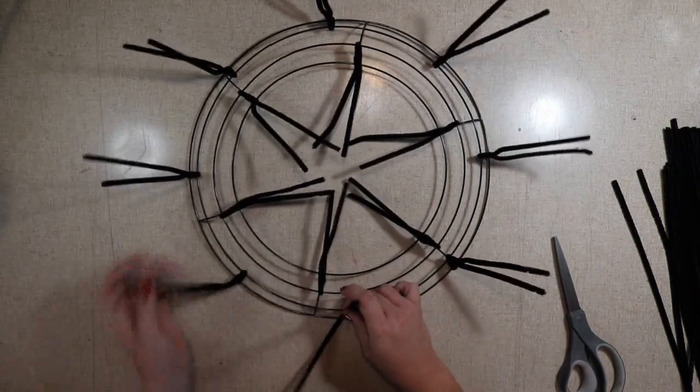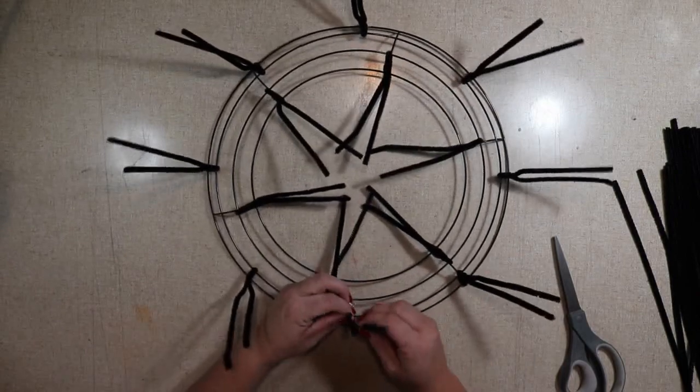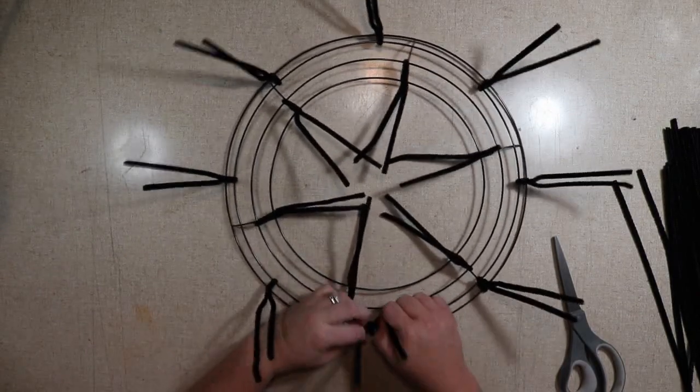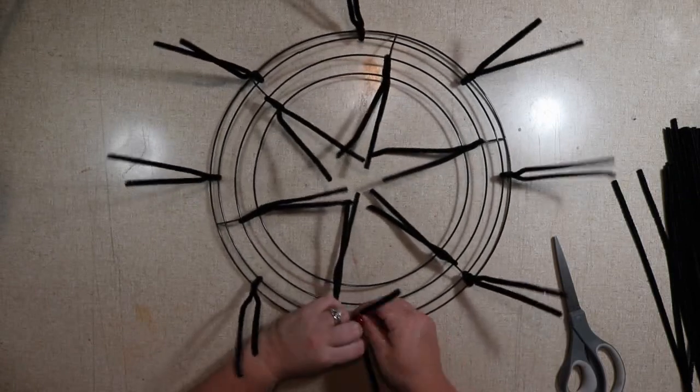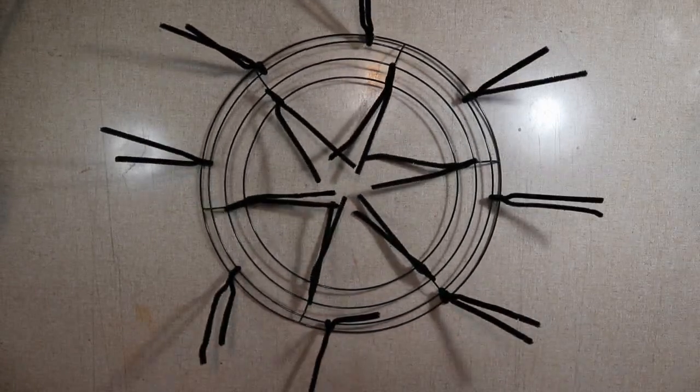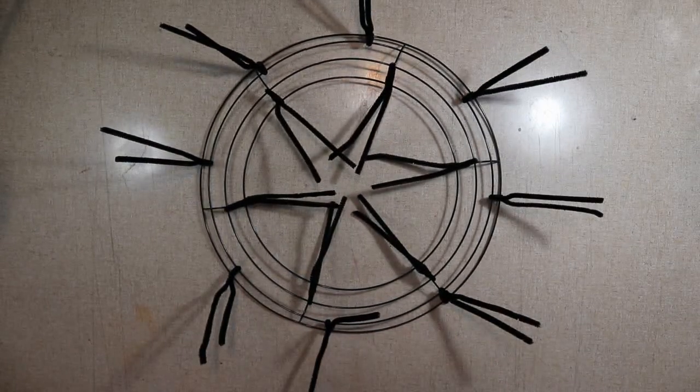If you do it correctly, the last pipe cleaner should, when you lay it down, line up with the first one you put down. And it's okay if it's not perfect. This is what it looks like when it's done. So that's how you make your own pencil wreath.